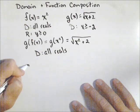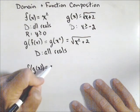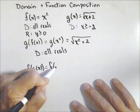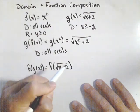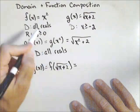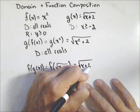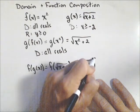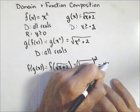Let's reverse the order. f of g of x. So now we're putting g(x), which is square root of x plus two, into f. So basically we're squaring it. So square root of x plus two squared, which equals x plus two.